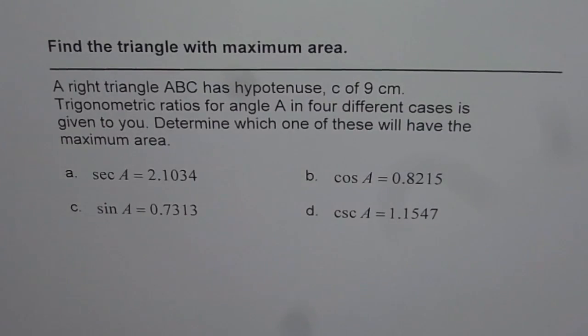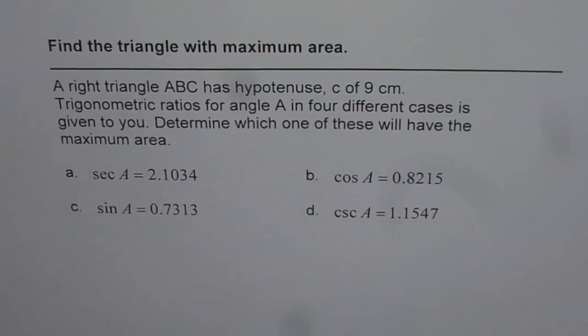Find the triangle with maximum area. A right triangle ABC has hypotenuse C of 9 cm. Trigonometric ratios for angle A in 4 different cases is given to you.